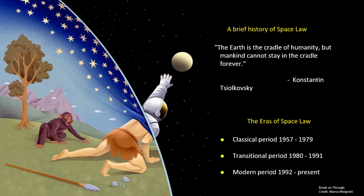We have almost an intrinsic necessity to explore and go beyond. In this context, we may find three different areas of space law. First, the classical period from 1957 to 1979, where major documents and structures of space law were conceived. Space activities could only be done by states and their governments.